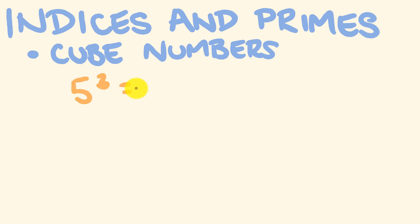5 multiplied by itself three times. This means 5 times 5 times 5. We call this a cubic number because if you were to draw a cube and the side length was 5,